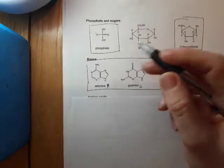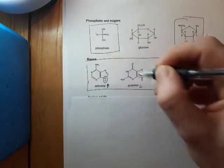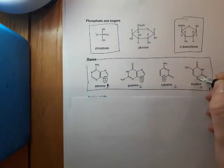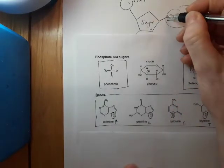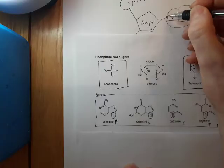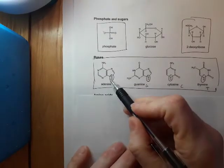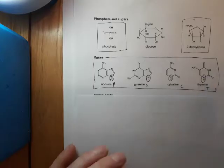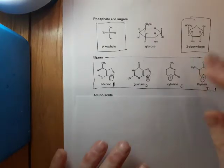The next thing to notice: these NHs here are where this bond is. This is the nitrogen through which all of these bases will attach to the sugar — the deoxyribose.